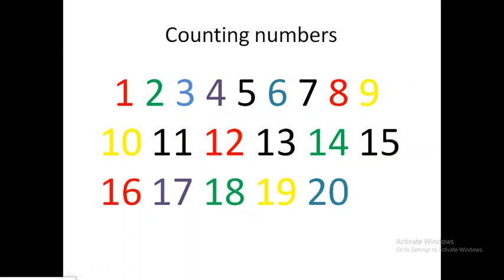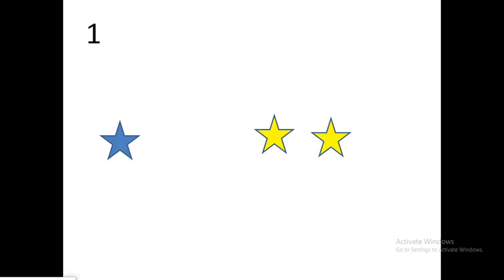Moving on, we will have to count the number of stars that you see. Let's look at the blue stars here. How many stars are there? Yes, it's only one star. Let's count the yellow stars: one, two. So we have two stars.